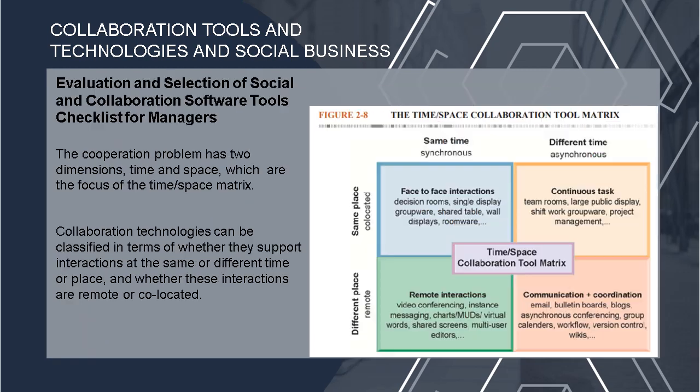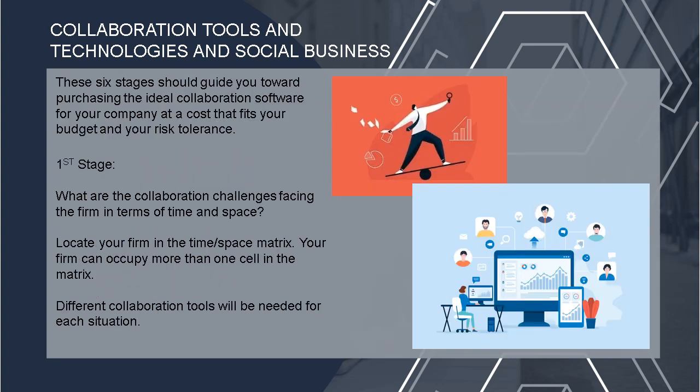When evaluating and selecting social and collaboration software tools, managers should use a checklist. The collaboration problem has two dimensions — time and space — which are the focus of the time-space matrix. Collaboration technologies can be classified by whether they support interaction at the same time or different times or places, and whether these interactions are remote or co-located. There are six stages serving as a guide to purchasing ideal collaboration software. First stage: identify what collaboration challenges the firm faces in terms of time and space, then locate your firm in the time-space matrix. Your firm can occupy more than one cell, and different collaboration tools will be needed for each situation.